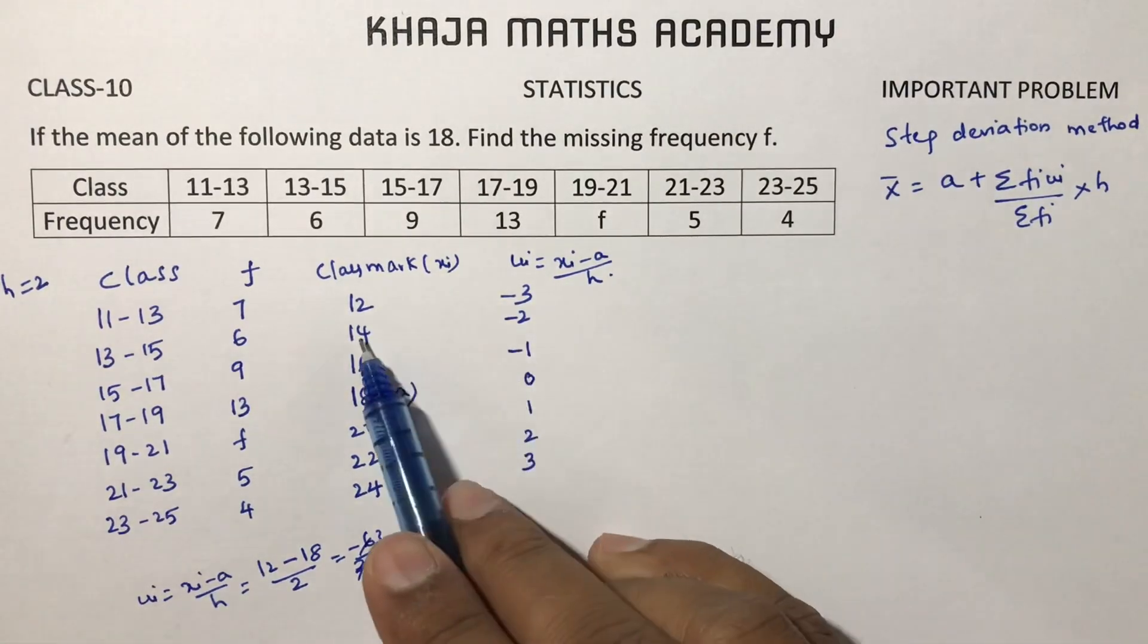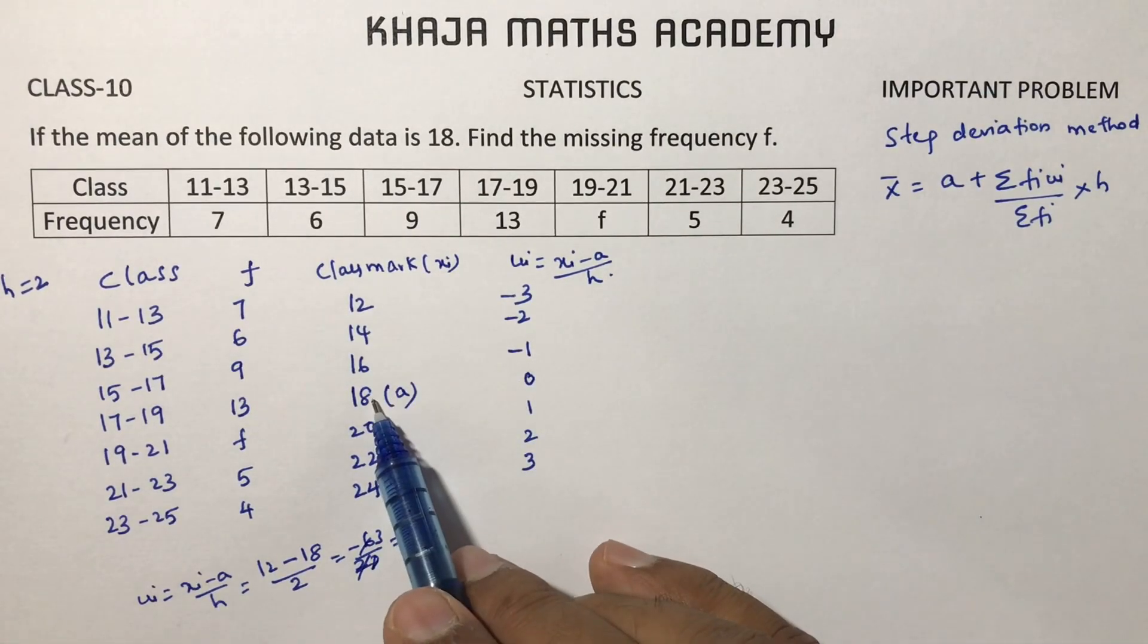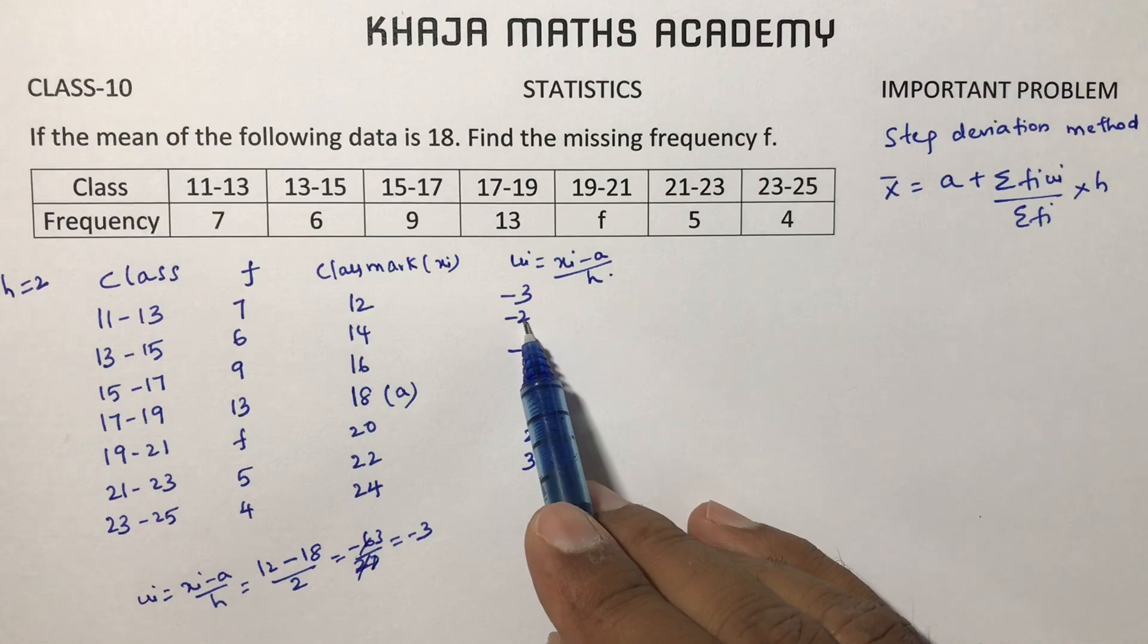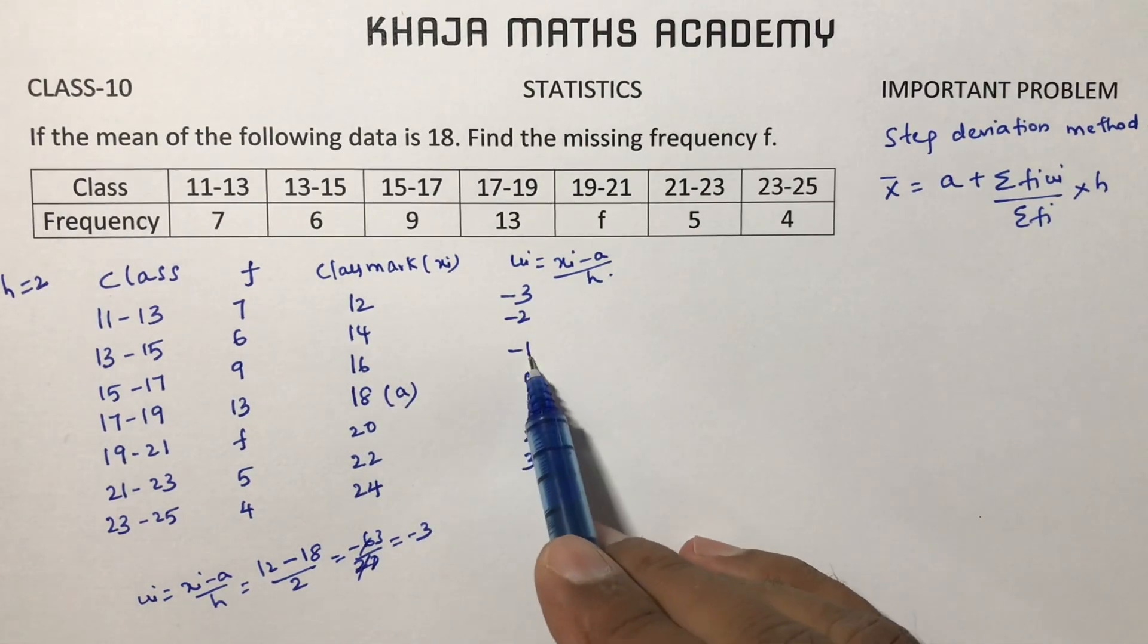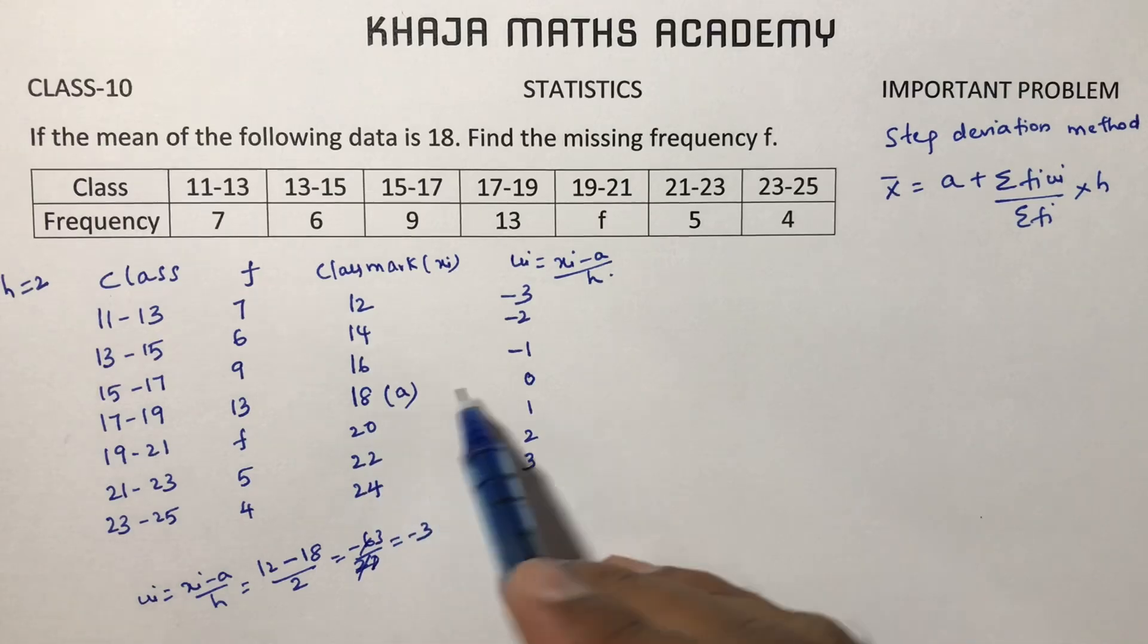In the same way, 14 minus 18 is minus 4. Minus 4 by 2 is minus 2. 16 minus 18 is minus 2 by 2, that is minus 1. And 18 minus 18 is 0.